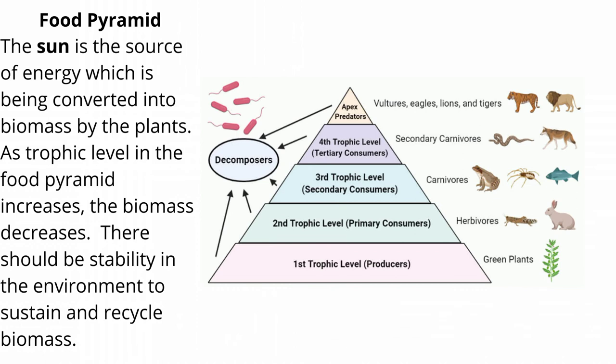The decreasing number of plants can cause the drop of plant-eater population due to scarcity of food. Human activities such as illegal logging, fishing and mining, as well as the conversion of agricultural and forest lands into industrial or residential uses, can threaten the stability of the environment.